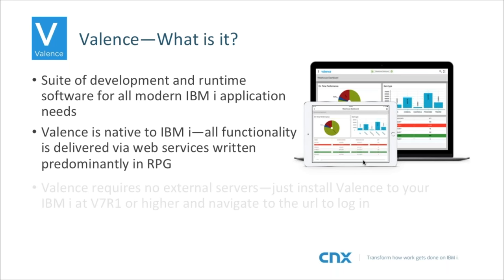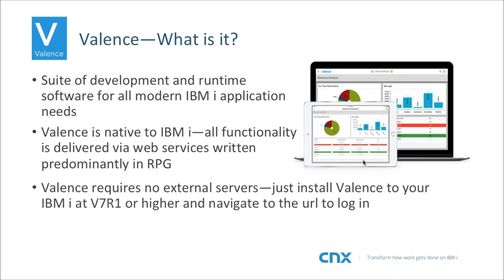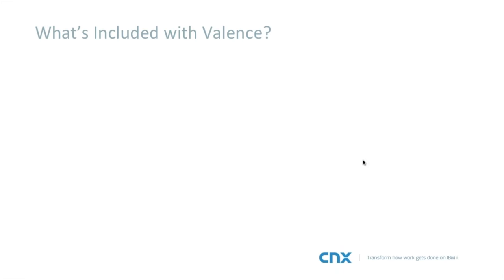A few major points: Valence is native to the IBM i and all functionality is delivered by web services written predominantly in RPG. Valence does not require any external servers — everything you see today will be served directly off the IBM i natively. There are no mysterious extra servers or intermediate processing. You just install Valence to your IBM i and navigate to the URL to log in.